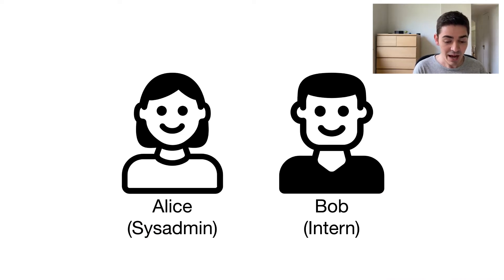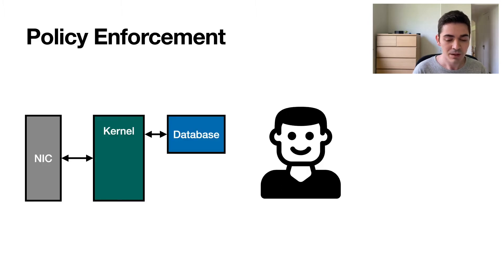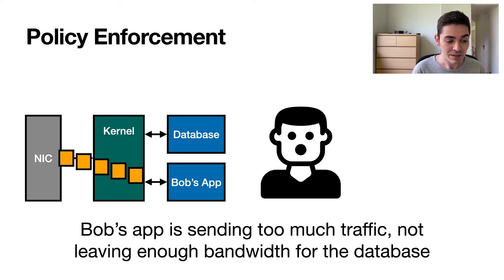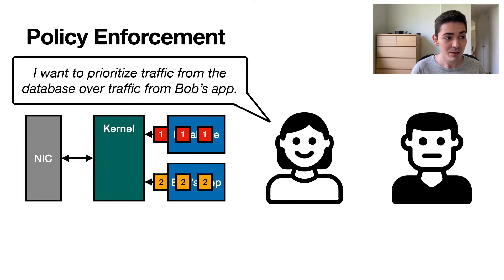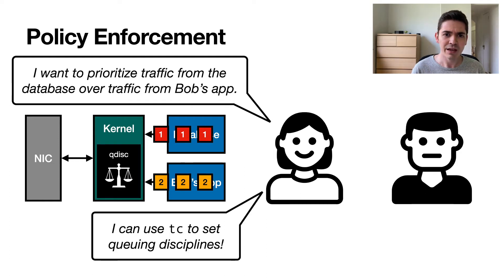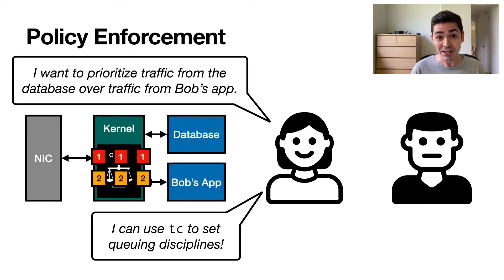To illustrate why this is the case, I am going to show an example using Alice, who is a system administrator, and Bob, who is a newly hired intern. Bob is actually quite happy — he just deployed his first application to production. But soon after, Bob realizes that his application is sending too much traffic, not leaving enough bandwidth for the database. Alice knows what she needs to do: she can prioritize traffic from the database over traffic from Bob's application using tools like TC to set queuing disciplines in the kernel. Since the kernel can oversee all traffic, it is able to impose arbitrary policy.